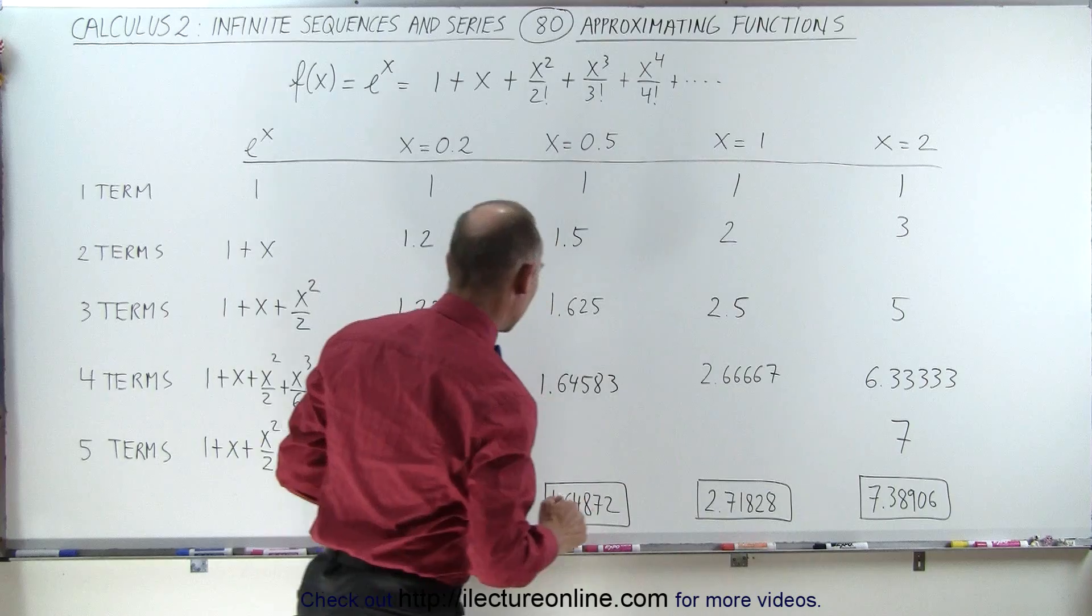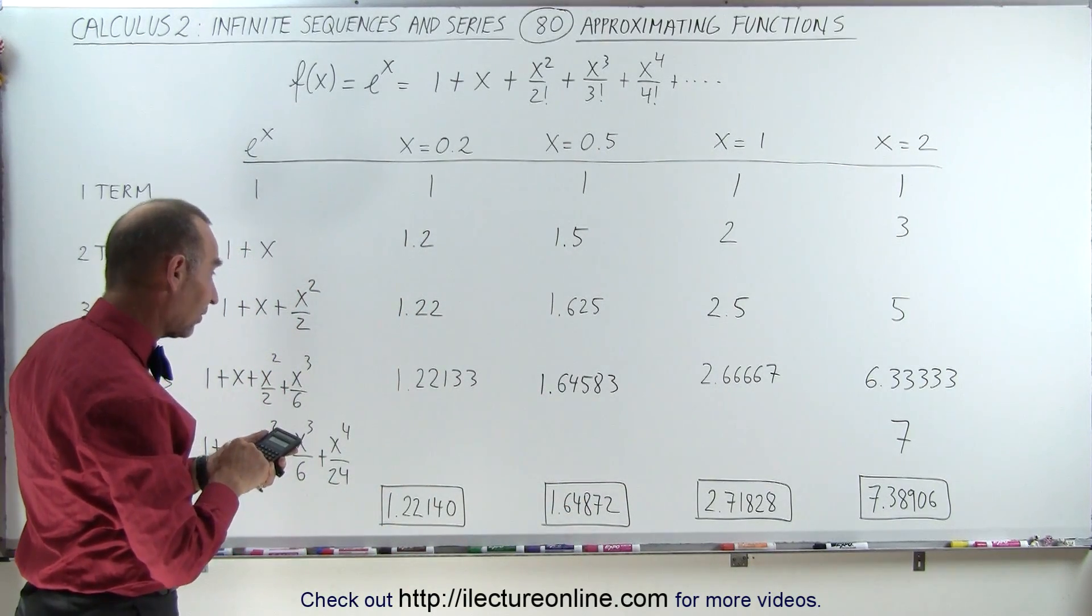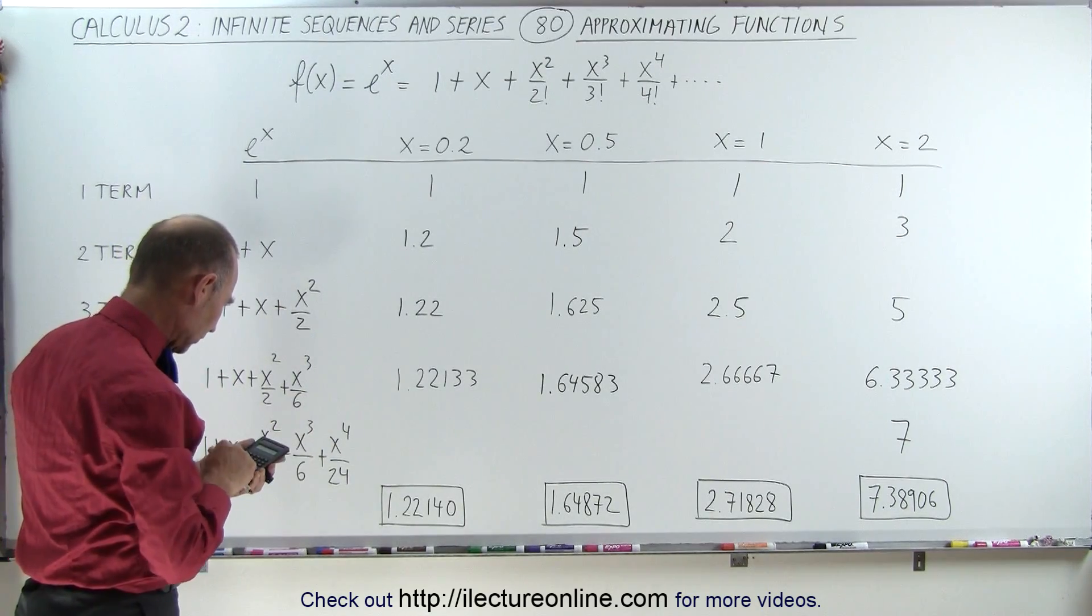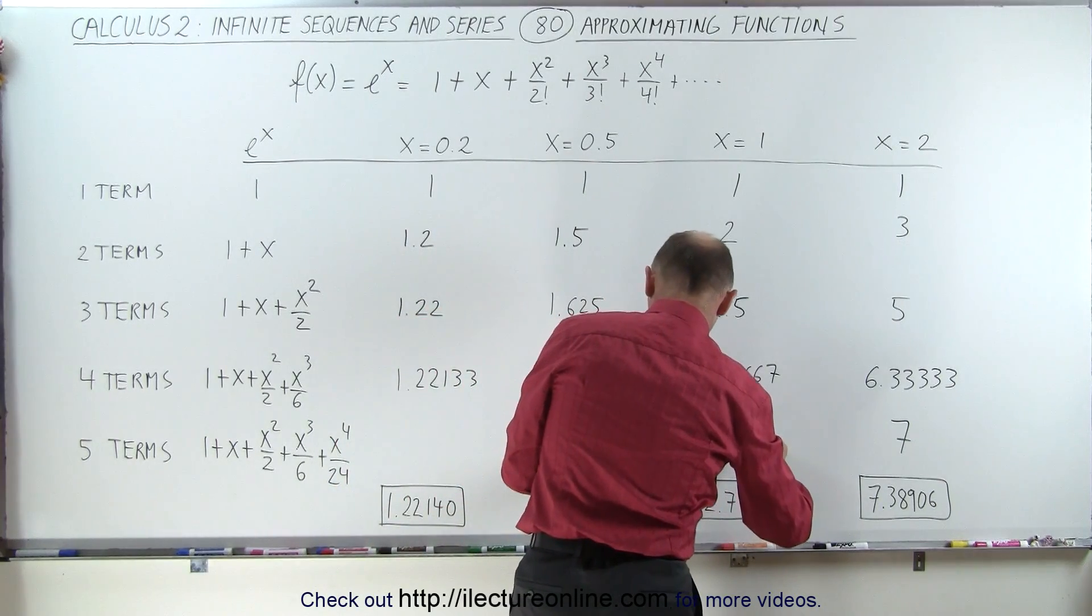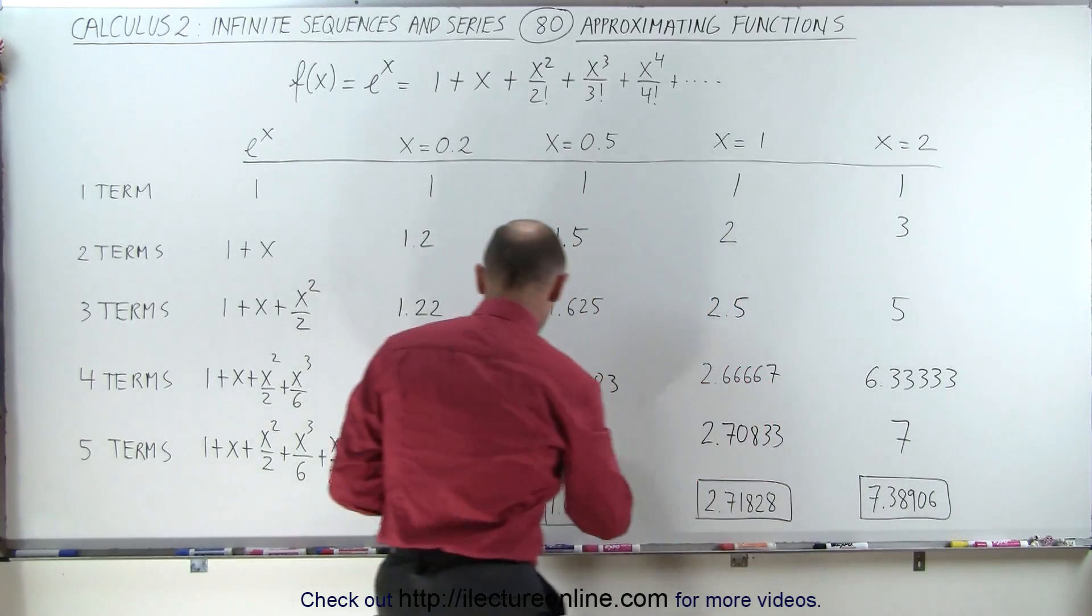Over here, we have 2.66667. And add that plus 1 divided by 24, and now we get 2.70833.